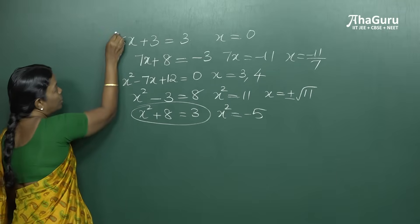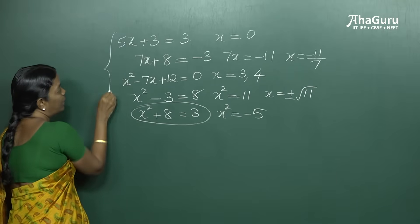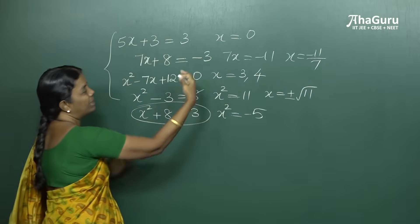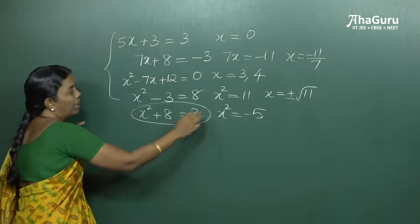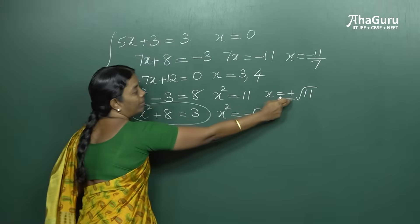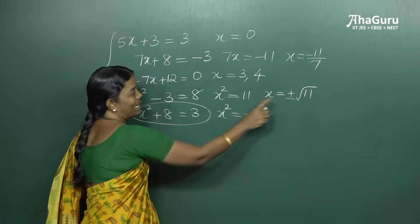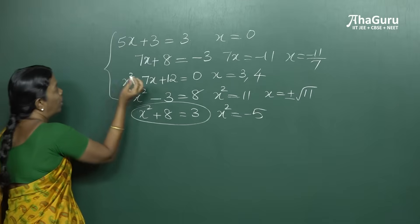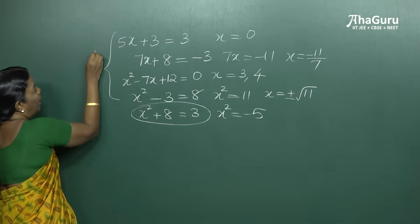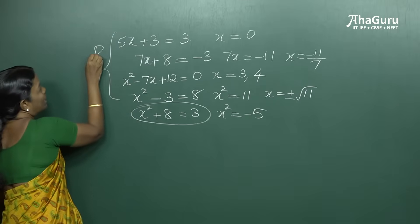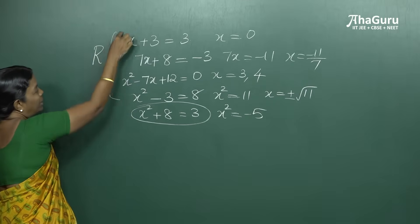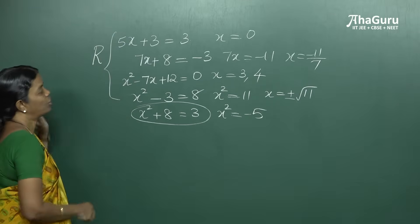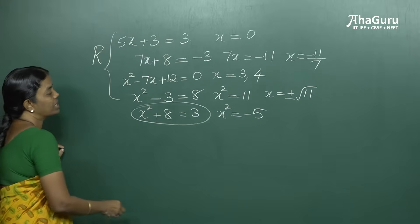The solutions for the previous equations are either rational numbers, integers, or irrational numbers like plus or minus root 11. All of these solutions can be placed under the set of real numbers.